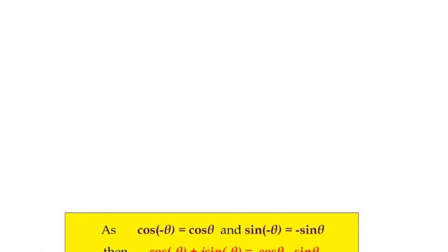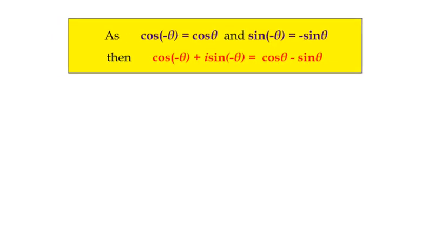To summarise: cos(−θ) equals cos θ, and sin(−θ) equals negative sin θ. So a complex number with a negative argument can be represented as r(cos θ − i sin θ). There's a little to think about with negative arguments, but it's worth practising.